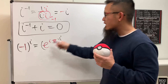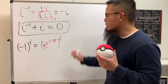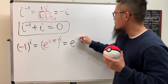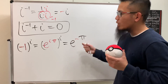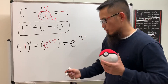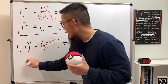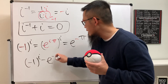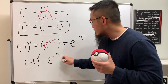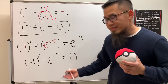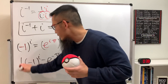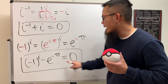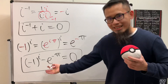Of course we multiply the powers together: i times i is i squared, which is negative one. So all in all, this is equal to e to the negative pi. Moving this to the other side, we get negative one to the i power minus e to the negative pi equals zero — another equation featuring i, e, pi, zero, and some negative signs.